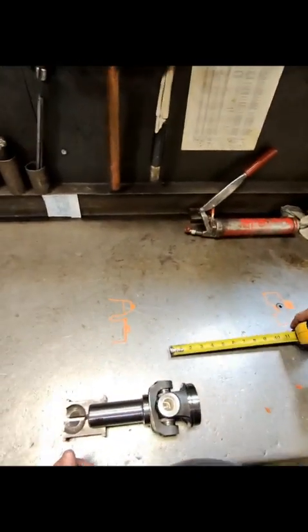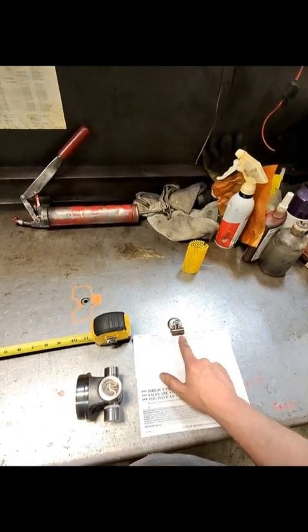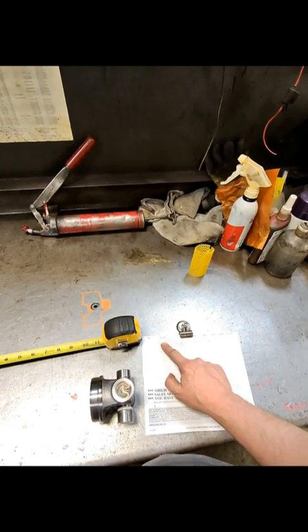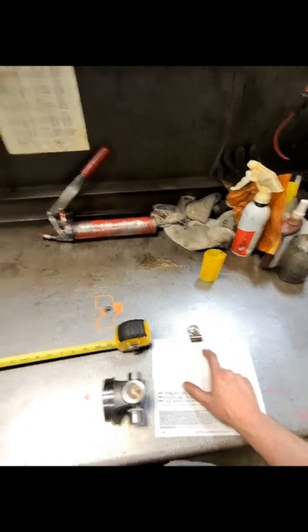All right, so I just want to show you how to measure here. Customer says you've got a 69 Camaro, 700R4, flat seal, half inch output sticking out.